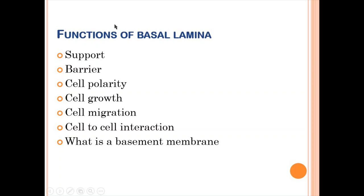The functions of the basal lamina and the basement membrane include: number one, to support epithelial cells; number two, it acts as a barrier; number three, it gives the cell its polarity; number four, cell growth — it allows epithelial cells to grow; number five, cell migration; number six, cell-to-cell interaction.